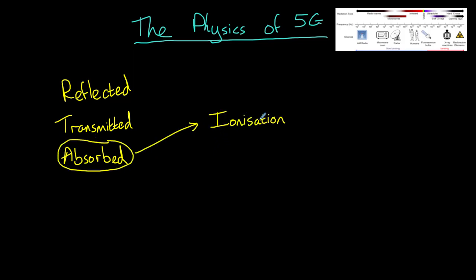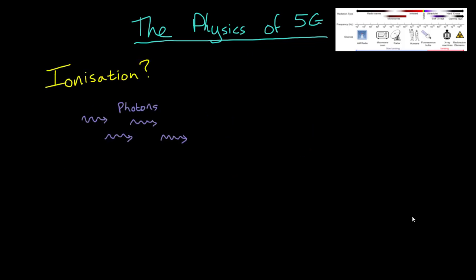It can ionize the atoms in our body. I'll explain what that means in a moment. Or it can heat up the atoms in our body. So what is ionization? All radiation travels at the speed of light in little packets called photons. When one of these photons hits an atom in your body, it may have enough energy to knock one of the electrons in your atom right off. This is called ionization.